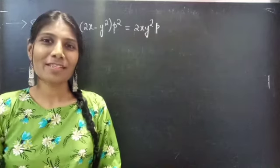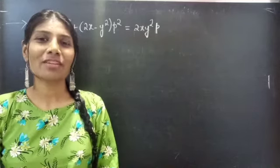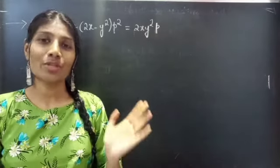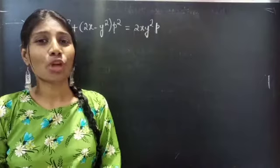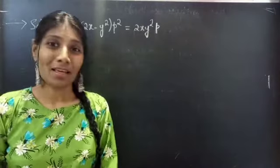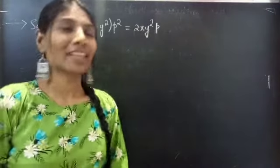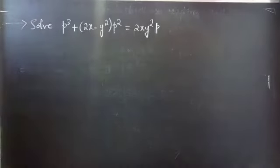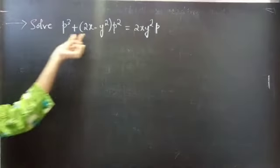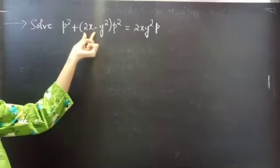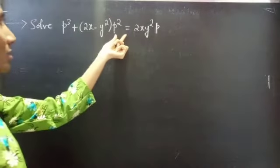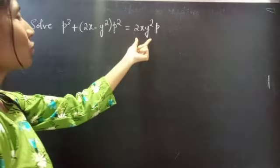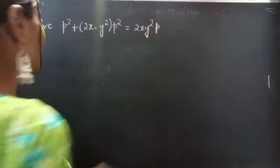Hello everyone, this is Jay Kalpana here. In this video, we are going to see a problem from the 'solvable for P' method. Let's get started. The problem: solve PQ plus 2X minus Y square into P square equals to 2XY square P.